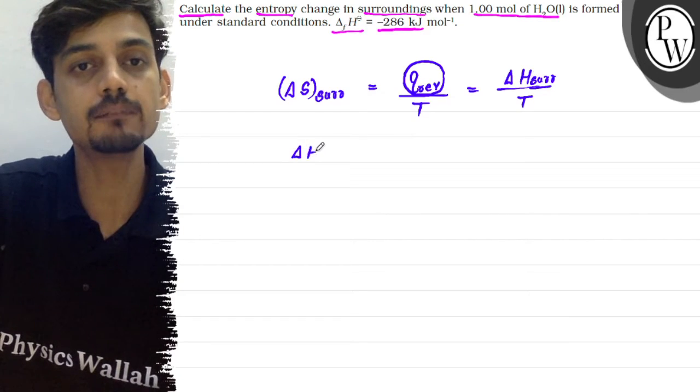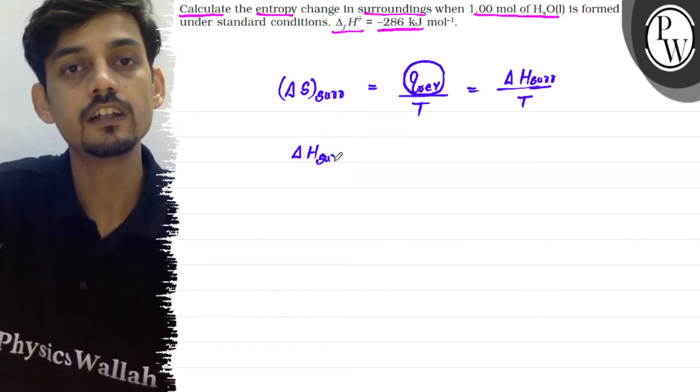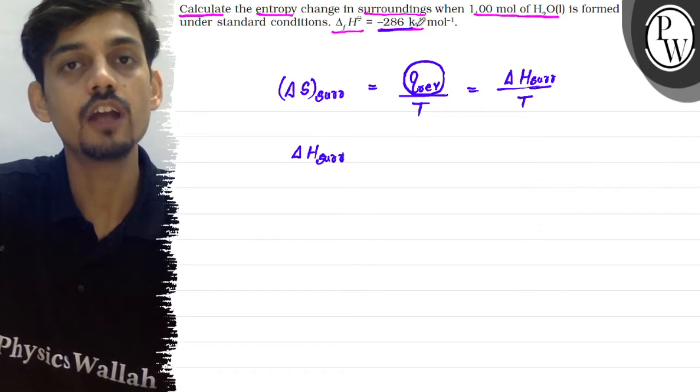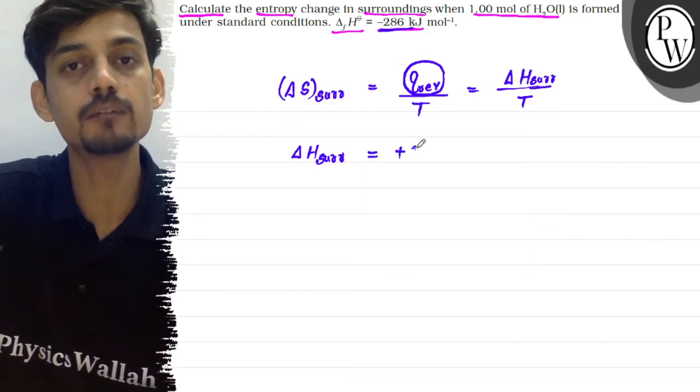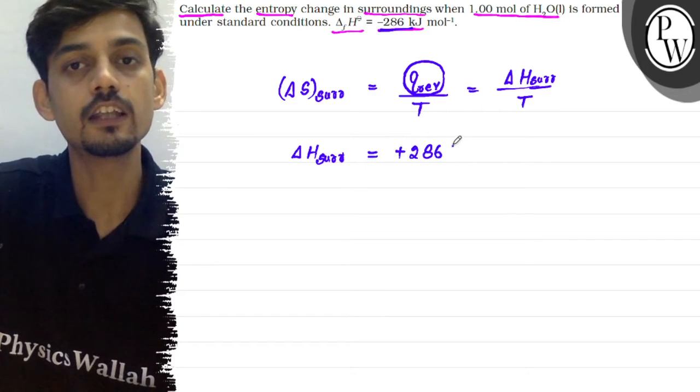Because the system's delta H is negative, the system has evolved energy which the surroundings have absorbed. So delta H for surroundings will be plus 286 kilojoules per mole.